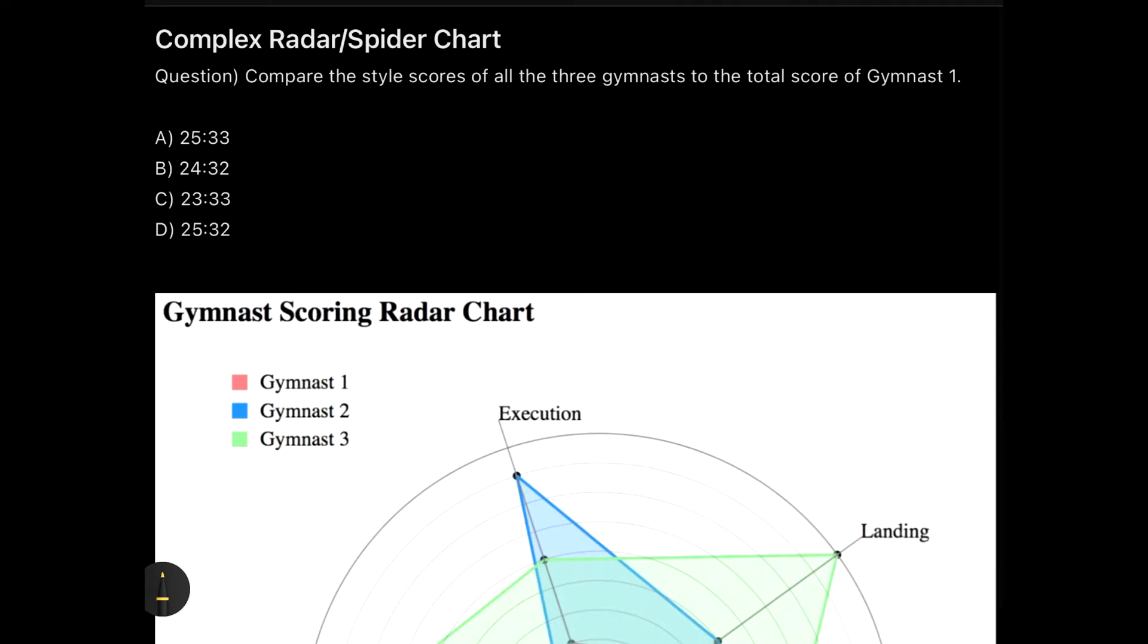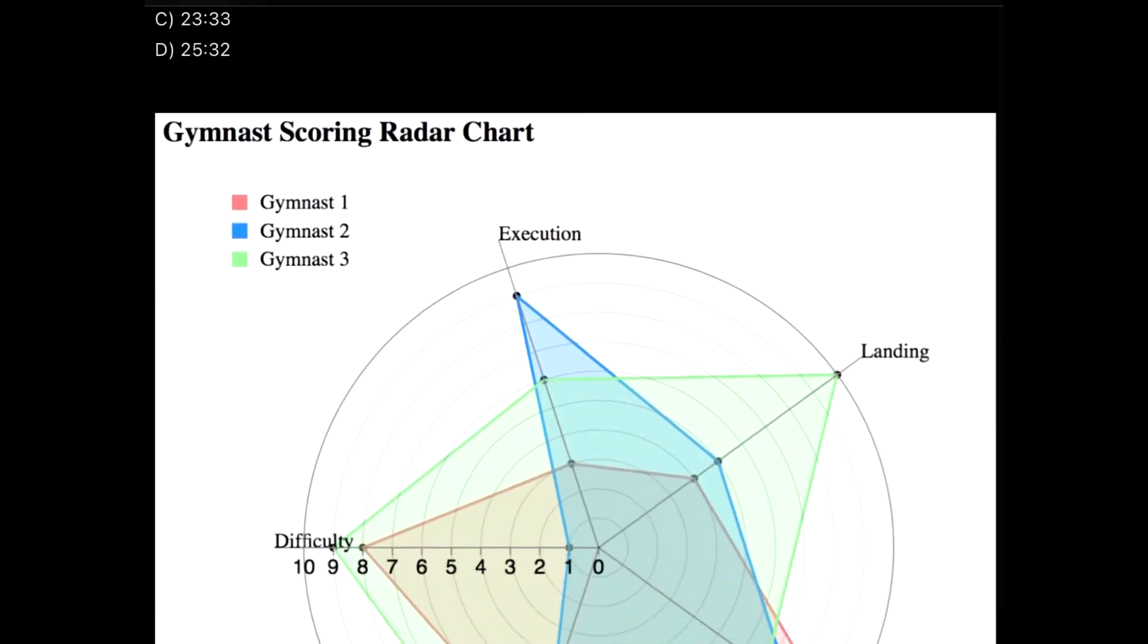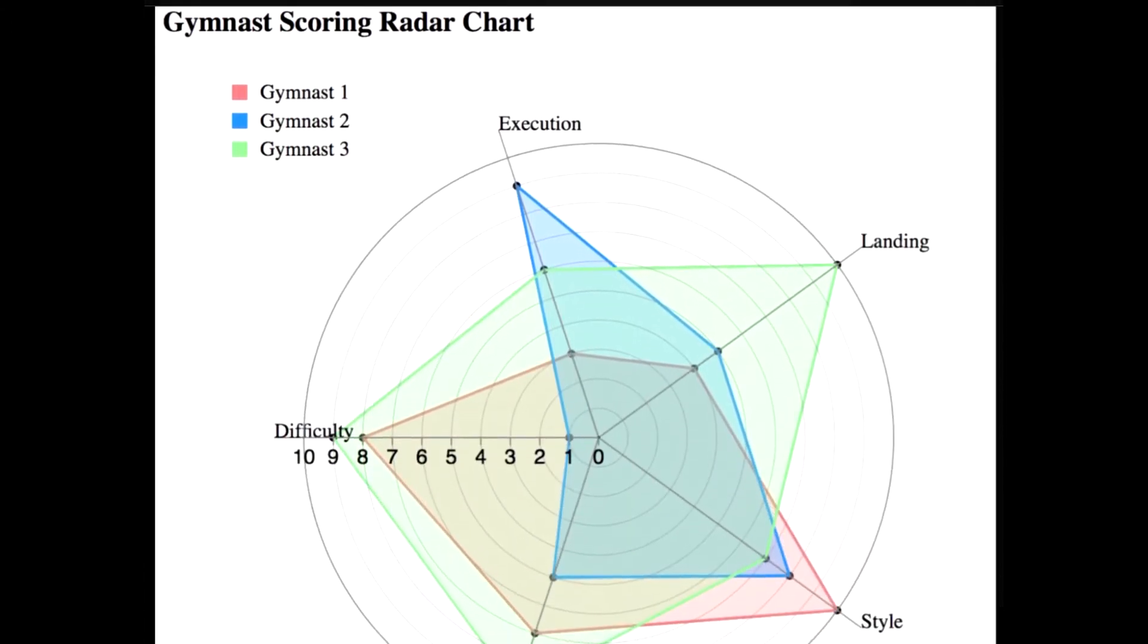So here comes the question: compare the style scores of all the three gymnasts to the total score of gymnast one. Let's go and find out what are the data or the information mentioned here in this spider chart.